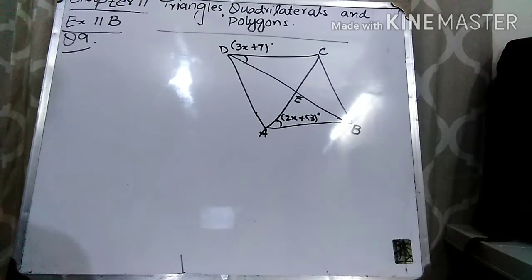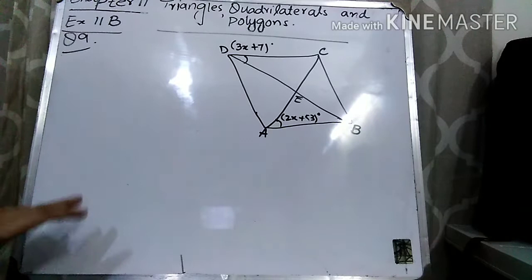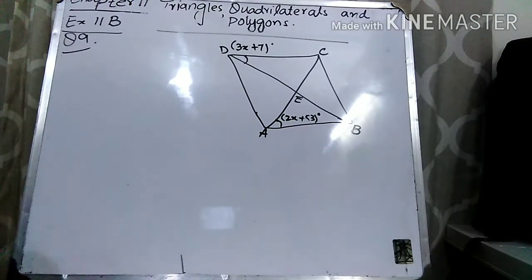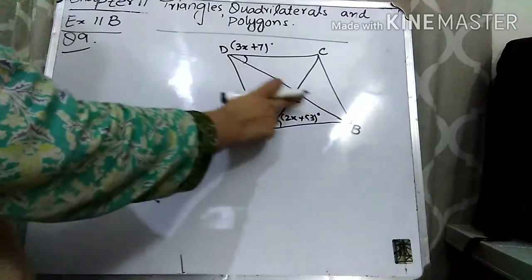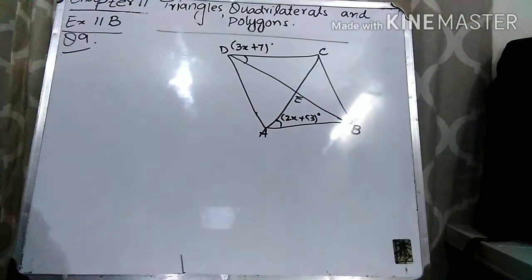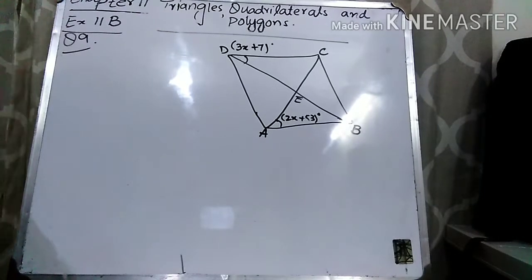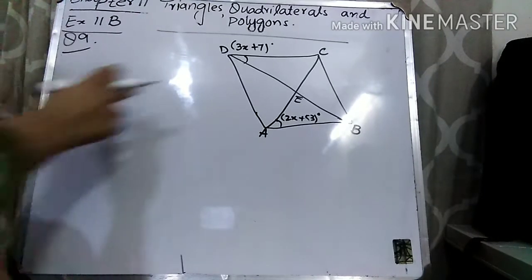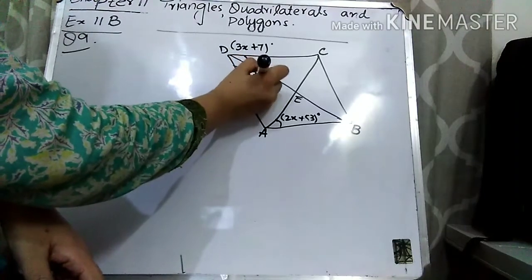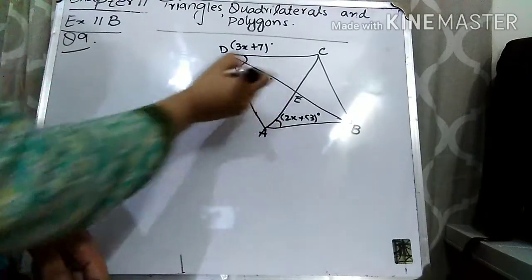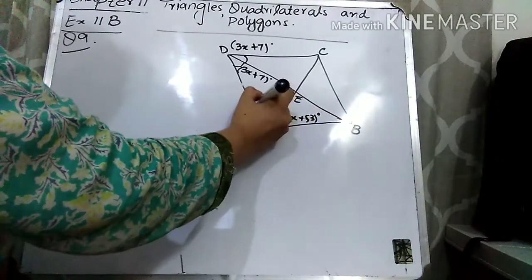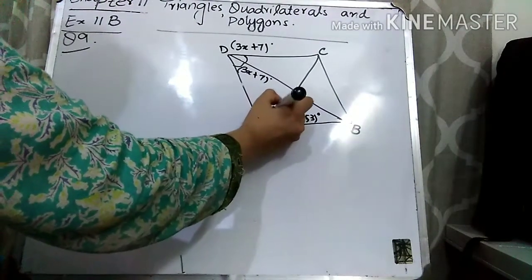Remember that in the rhombus, whenever there is an interior angle and the diagonal bisects it, the angle on both sides is equal. So if this is 3X plus 7, then this is also 3X plus 7. In the same way, if this is 2X plus 53, then this is also 2X plus 53.